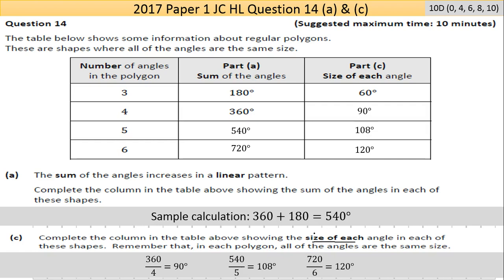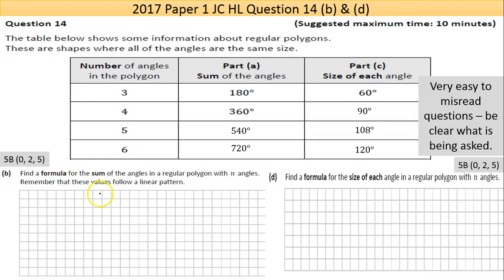Part B here. Find a formula for the sum of the angles in a regular polygon with n angles. We're using n instead of x here as our variable. Remember that these values follow a linear pattern, so we're giving you a hint. You can see it's going up by 180 every single time. The number of stages here is n, so n is equal to 3, 4, 5, 6.